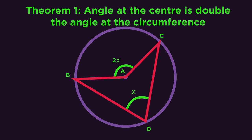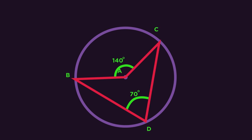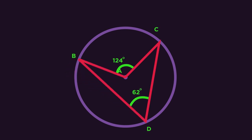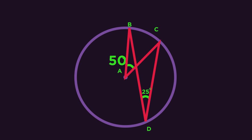Sometimes this theorem can be a little disguised. See what happens when I move point B around. So if you see this sort of setup, remember that the angle at the centre is double the angle at the circumference, even if it doesn't have the normal arrowhead shape.